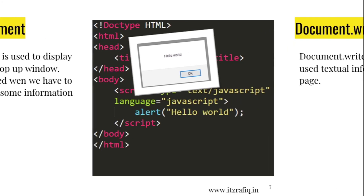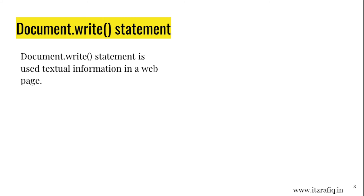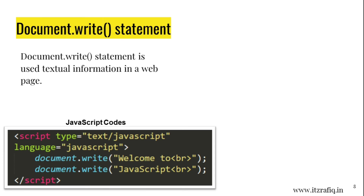document.write statement: The document.write statement is used to display textual information in a web page. To write it, the syntax is: script type='text/javascript' language='javascript', then document.write('whatever you want to write'); and then close the script tag. If we run this command in a web browser, the output will display the text in the page.